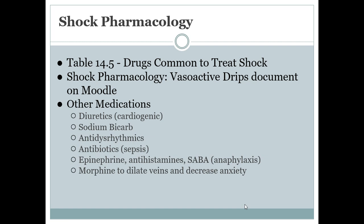Other medications include diuretics for cardiogenic shock, sodium bicarbonate — which helps treat acidotic states — and anti-dysrhythmics. We might also use antibiotics, epinephrine and antihistamines, inhalers, and morphine to help dilate the veins and decrease anxiety if needed.